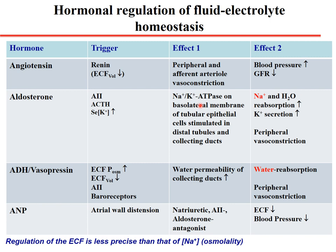Aldosterone affects the sodium-potassium ATPase on the basolateral membrane of tubular epithelial cells, stimulating the distal tubules and collecting duct to reabsorb sodium. Water follows the sodium, and potassium is excreted. Angiotensin also causes peripheral vasoconstriction.